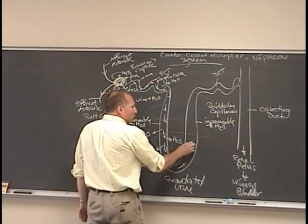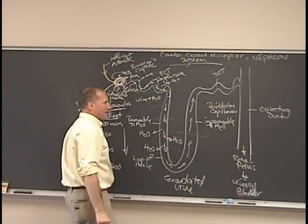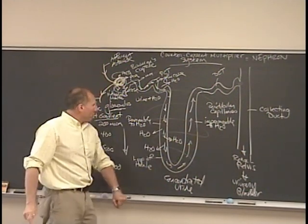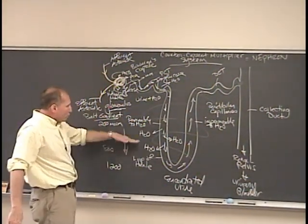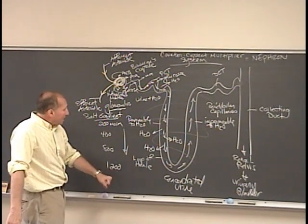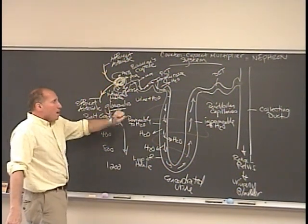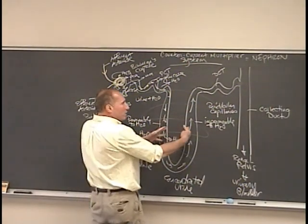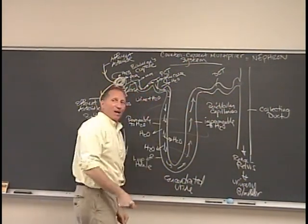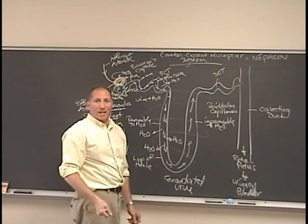As the filtrate then goes back up the loop of Henle, the walls are impermeable to water. So just as there was an increase of salt concentration on the outside as you went down, there is a decrease as you go back up. But because the walls are impermeable to water, the water can't come back in. And so therefore, the urine remains concentrated.